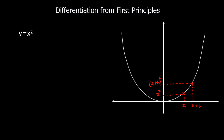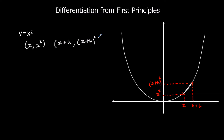If we take the tangent in between these two points — if we draw a straight line between the two points — we are going to get something like the gradient. We're going to do that, and then decrease the value of h until it gets to zero, and that will give us the gradient at that point. So we've got our two points: (x, x²) and (x+h, (x+h)²).